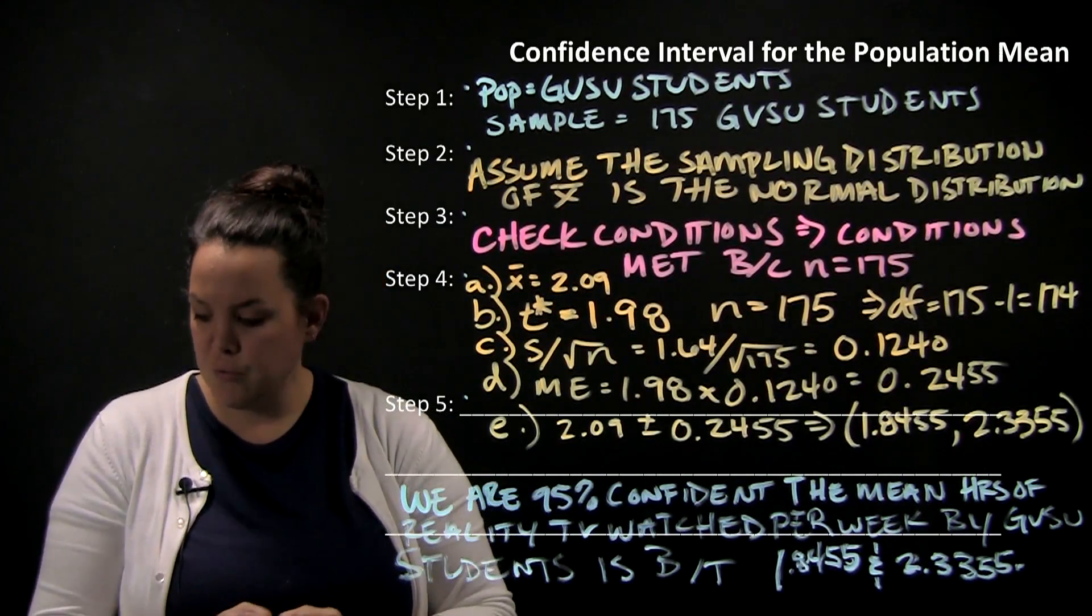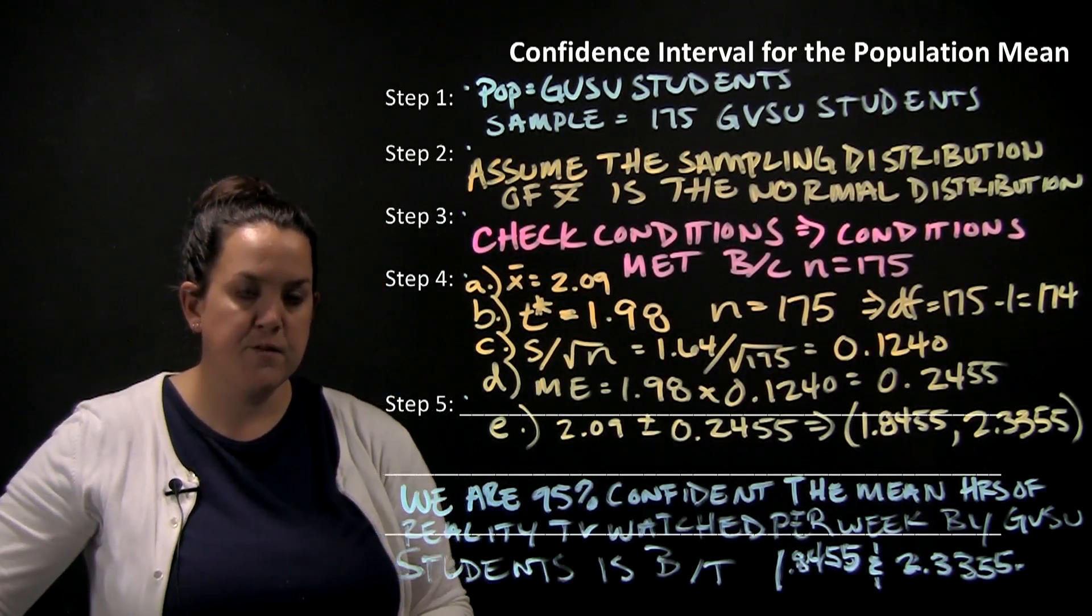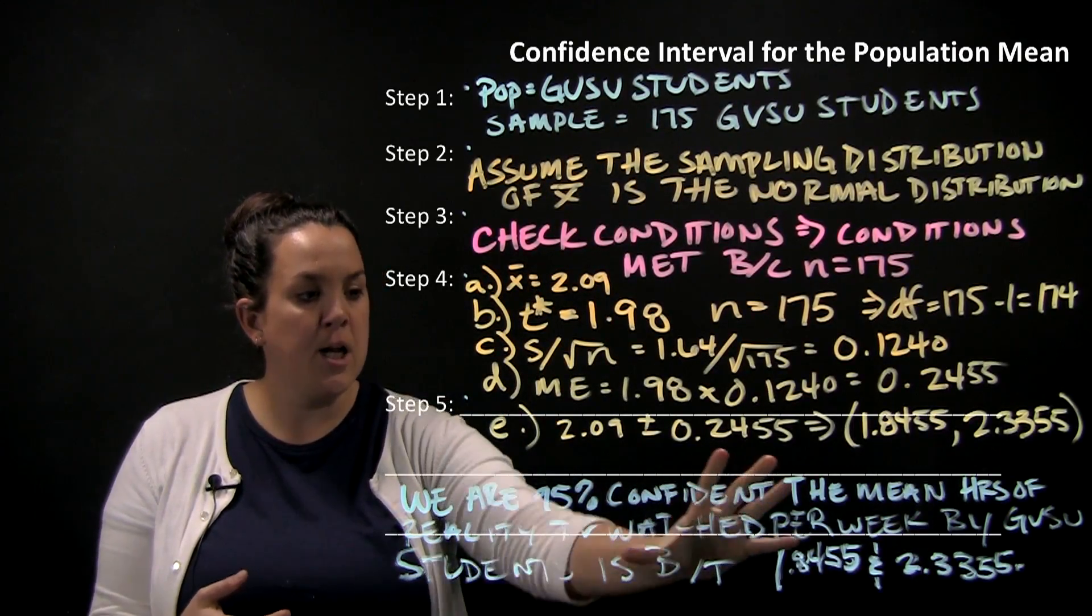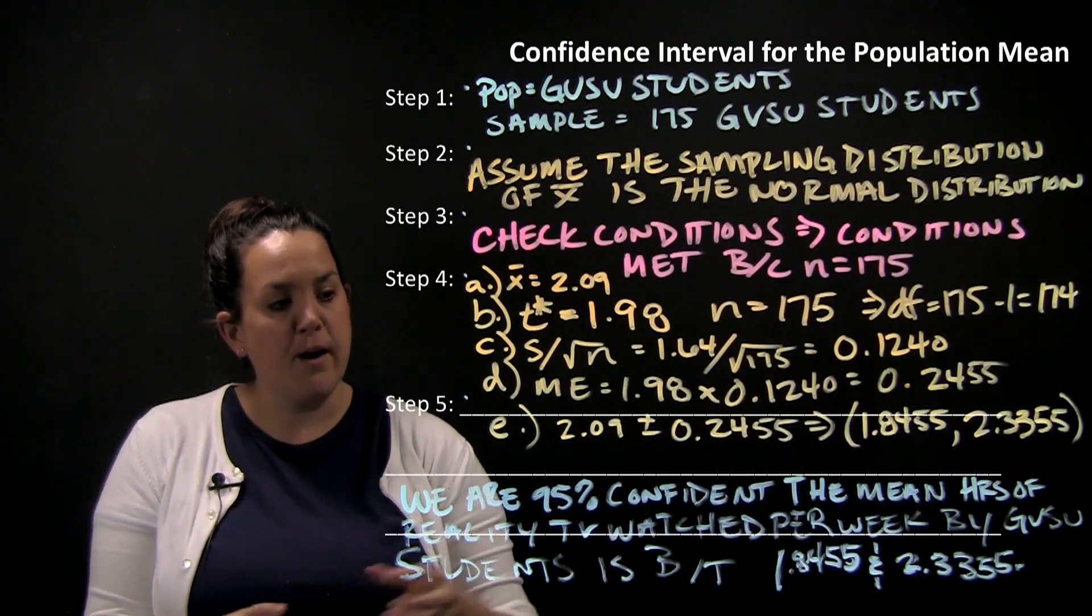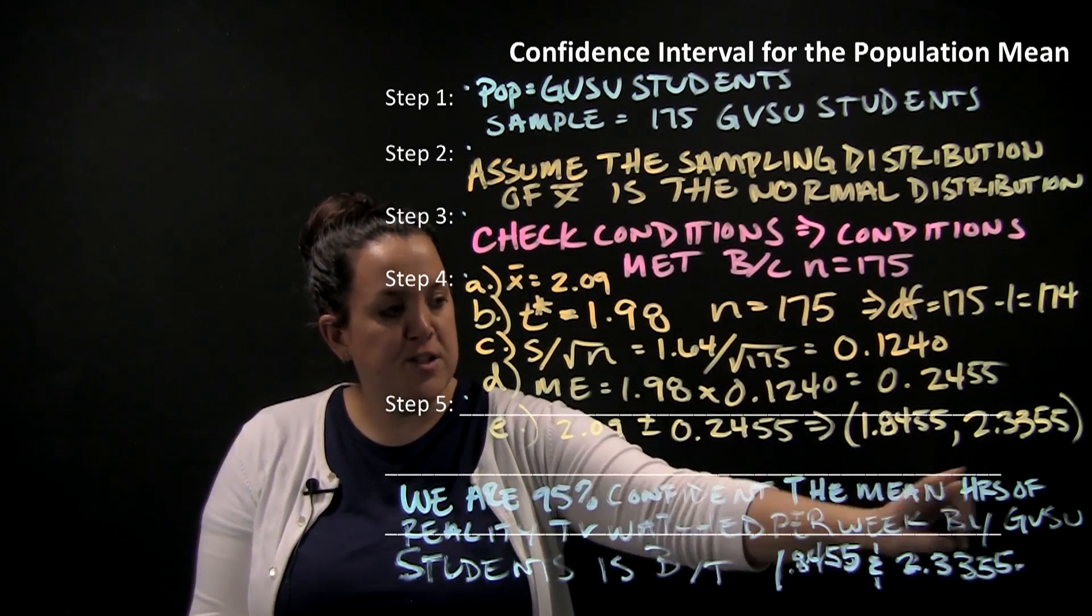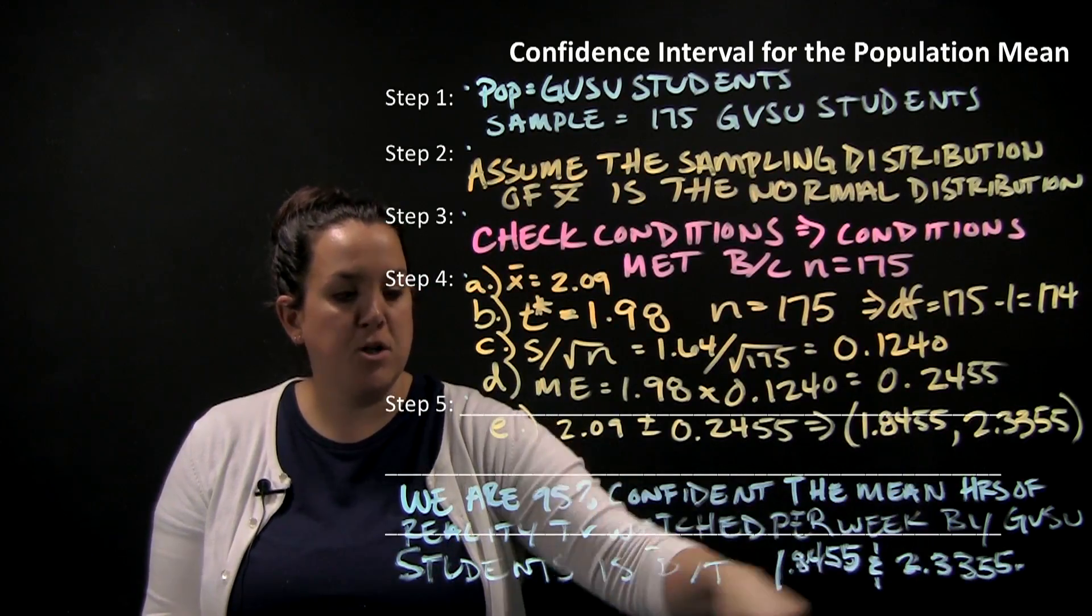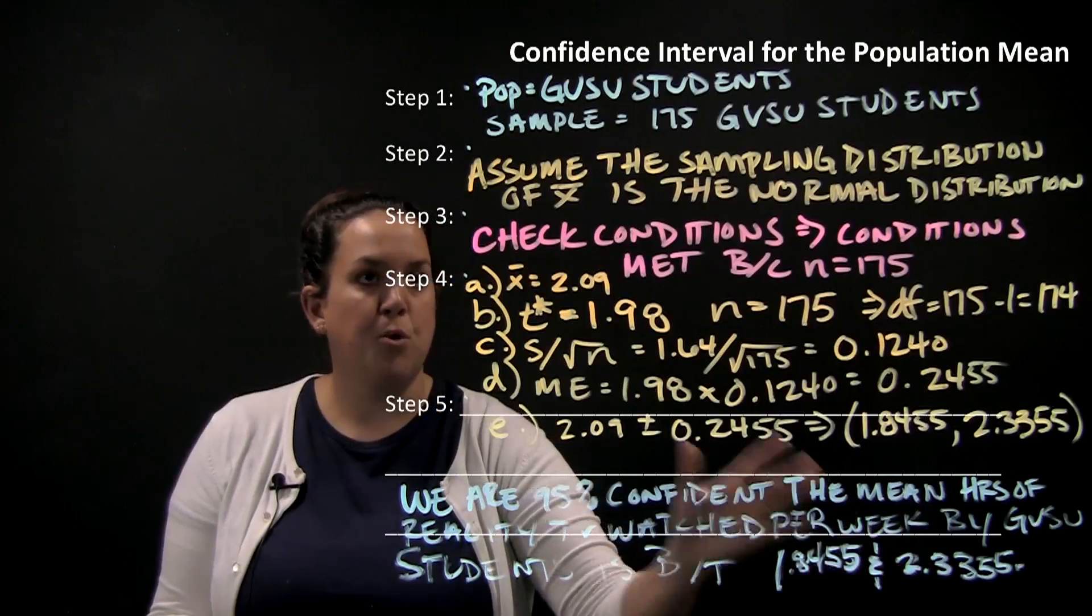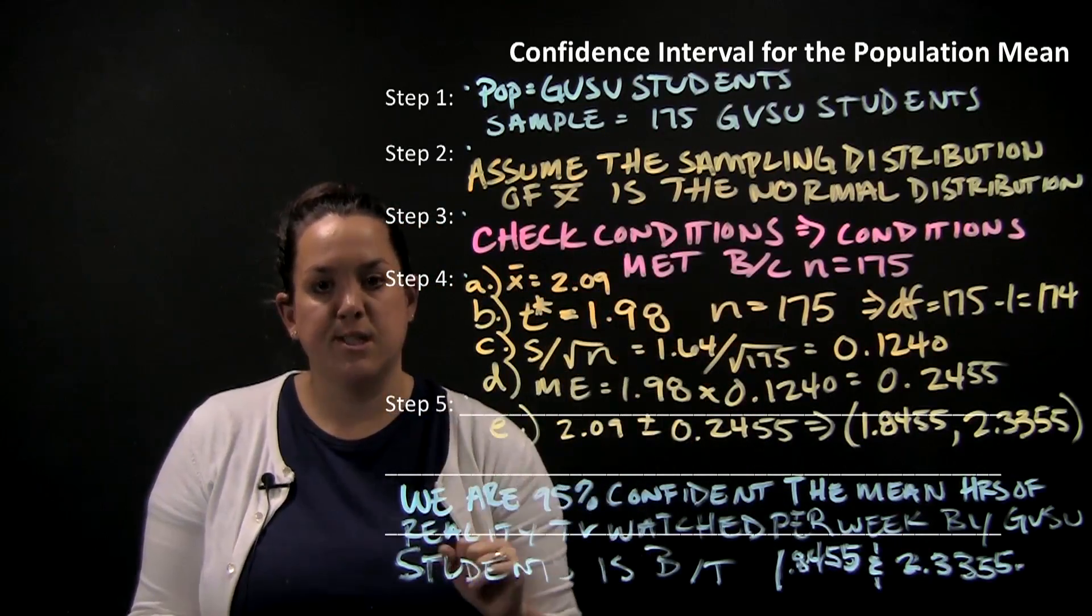So this is our first form of inference for quantitative data. Remember we have a population that we were trying to make an inference on. Here's the interpretation where we say we're 95% confident - that's the confidence level. And then our parameter is the mean hours of reality TV watched per week by GVSU students is between, and here's the interval we calculated based on what was seen in step four.